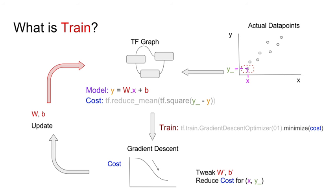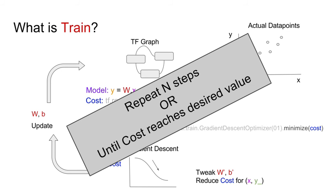With the new values of w and b, we feed them into the TensorFlow graph and choose a different data point. With the new w and b plus the new x of the next data point, we can predict another house price y. With the prediction and the actual house price, we calculate the cost again. We repeat these steps for n steps or until the cost reaches a value we are satisfied with.